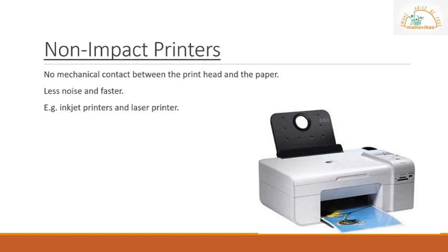Non-impact printers do not use a striking device to produce characters on the paper and there is no contact between the print head and the paper. So these printers produce less noise and print in better quality with greater speed. There are basically two kinds of non-impact printers: inkjet printers and laser printers. Inkjet printers have been popular for a long time because they are relatively inexpensive and ideal for home use where only a few documents need to be printed. Laser printers are fast and produce printouts of good quality.